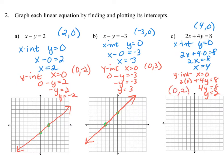We're going to plot both of those points: the x-intercept at (4, 0) and the y-intercept at (0, 2). Let's draw a line through those two points, and we've graphed the linear equation.